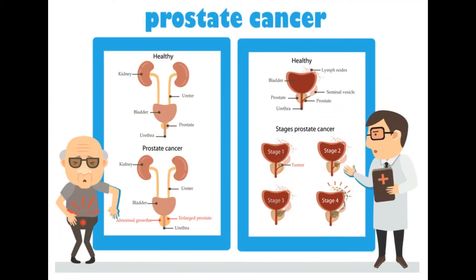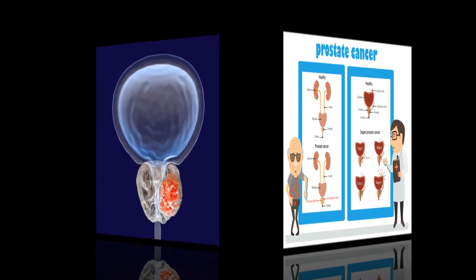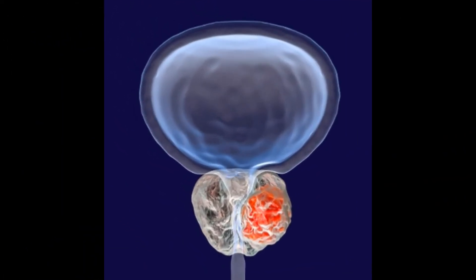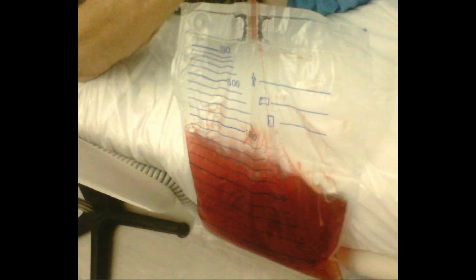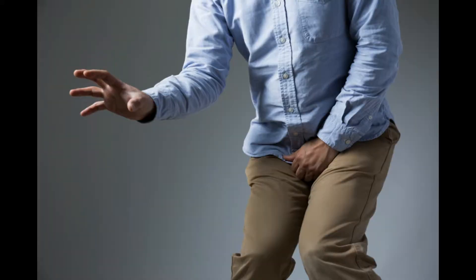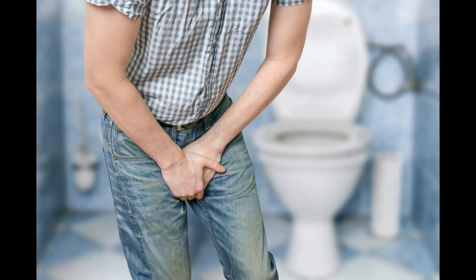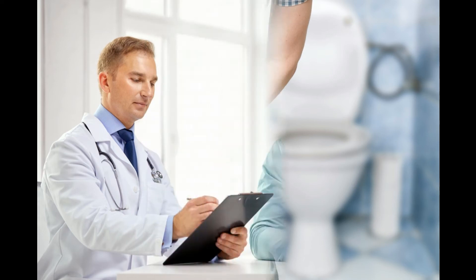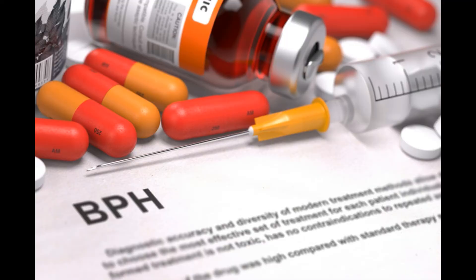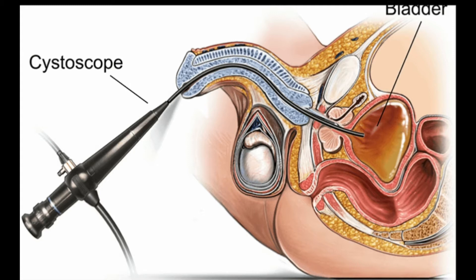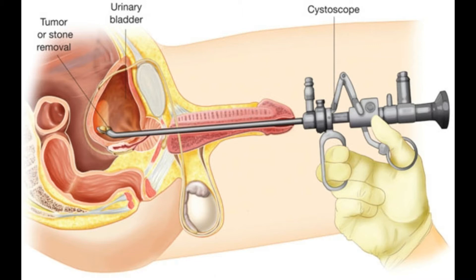Hematuria can also be seen in cancer of the prostate, and sometimes both conditions can be seen in the same patient — a mix of enlargement with cancer. This will of course produce a lot of symptoms, leading the patient to consult his primary care physician or urologist. Typically the physician will start by prescribing conservative medications to try to stop the bleeding and treat the cause, and will also order some tests to identify the origin of the bleeding.